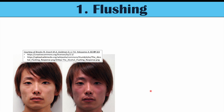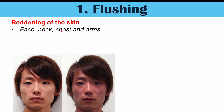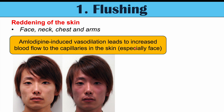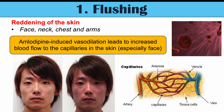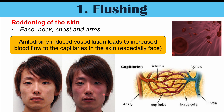Now let's discuss some of the skin changes that amlodipine can cause. One of them is flushing — increased redness of the skin, reddening of the skin. This can often occur on the face, neck, chest, and arms, so in the upper half of the body. The reason amlodipine does this is because of its mechanism of action: amlodipine-induced vasodilation leads to increased blood flow in capillaries of the skin. We have a lot of capillaries in the face, so this is often more pronounced there.